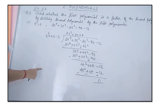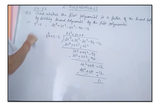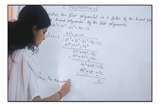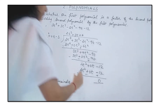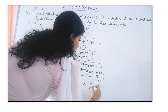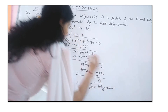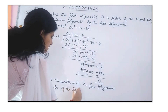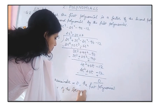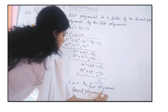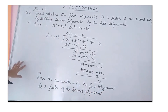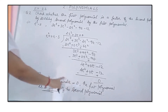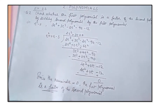At last we are getting the remainder to be 0. Since the remainder is 0, the first polynomial is a factor of the second polynomial. To summarize: if the remainder is 0, then the first polynomial is a factor; if the remainder is not equal to 0, then the first polynomial is not a factor of the second polynomial.